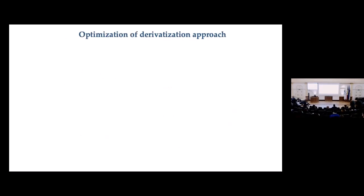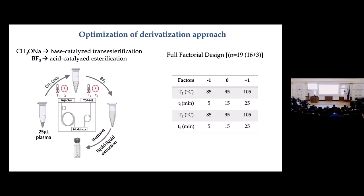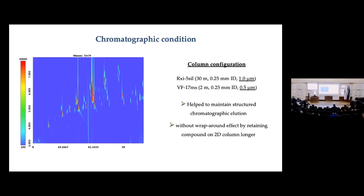For optimization of the derivatization approach we optimized the CH3ONa and BF3 approach. The first step adds CH3ONa which derivatizes the bound form of fatty acids in plasma, while the second step derivatizes the free fatty acids. We are using just 25 microliters of plasma, so it is really a micro-volume extraction. To optimize time points and temperature we used a full factorial design. For chromatographic conditions we used a normal phase configuration with non-standard film thickness to investigate how lipid molecules interact with column thickness.